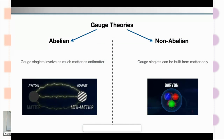In an abelian gauge theory, if you want to make sense of something composite that's stable — a gauge singlet — the states nature allows always need as much matter as antimatter. You can combine an electron and positron to form positronium, but it has as much matter as antimatter. However, in a non-abelian gauge theory, you can build a gauge singlet from matter only — for instance, how three quarks with no antiquarks form one baryon.